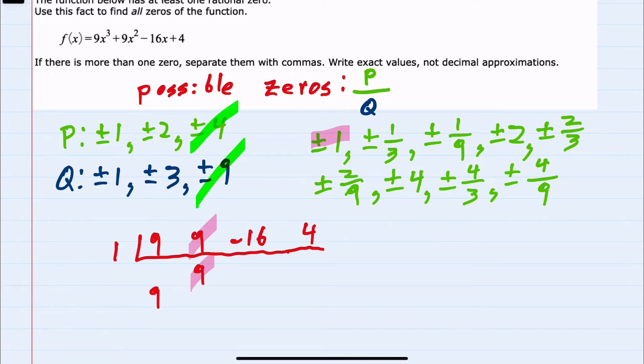Adding gives us 18. 1 times 18 is 18. Adding again gives us 2. Multiplying 1 and 2 is 2. And since this leaves us a remainder and not 0, then I know that this is not a possible solution.